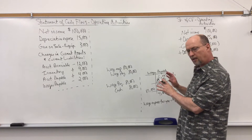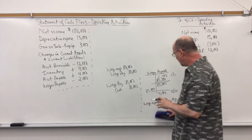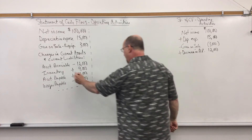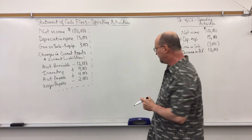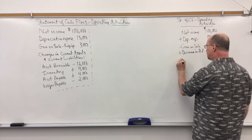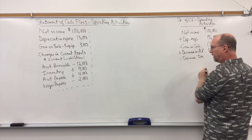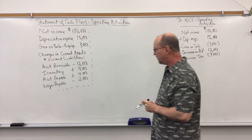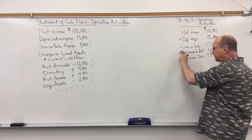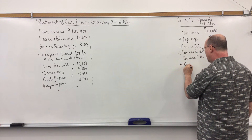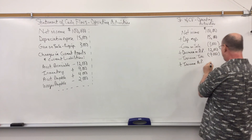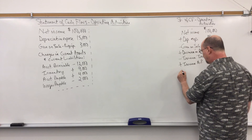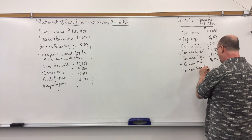Let's finish out the operating activities section. We added back the decrease in accounts receivable of $12,000. For an increase in a current asset, we do the opposite — so we subtract the increase in inventory of $9,000. Accounts payable is a current liability that increased by $4,000, so we add the increase of $4,000. And wages payable decreased by $2,000, so we subtract that decrease of $2,000.